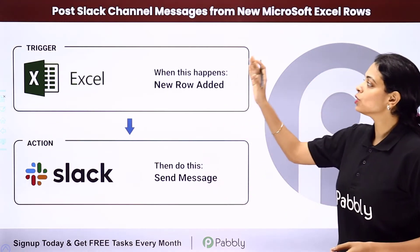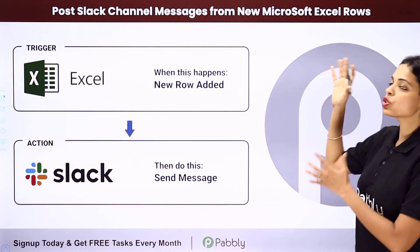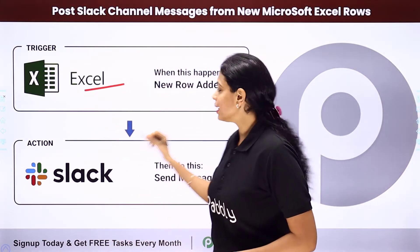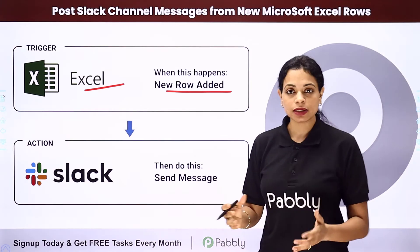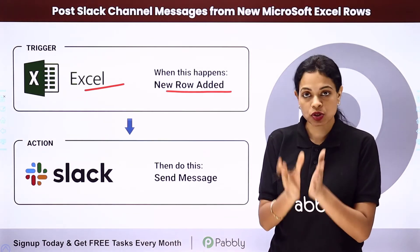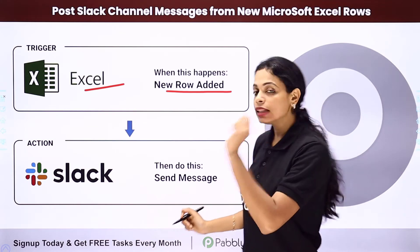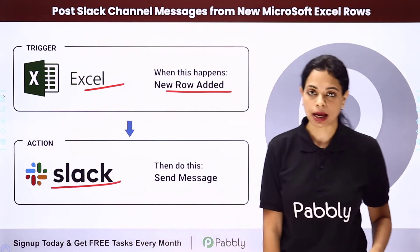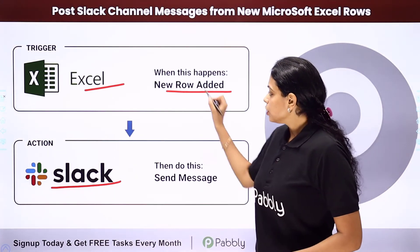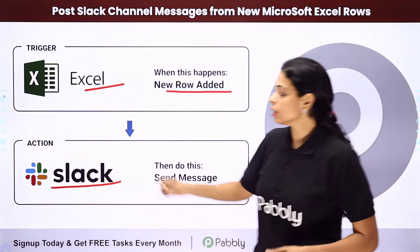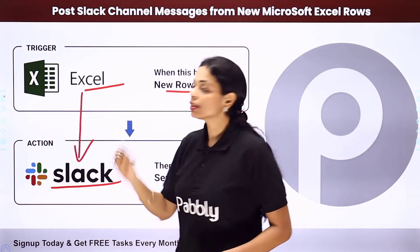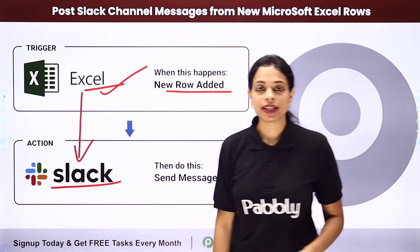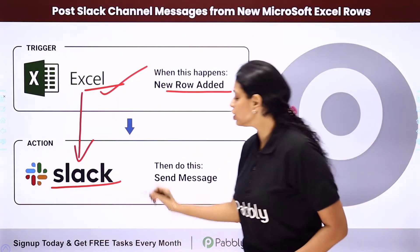In this video, we are going to see how to post Slack channel messages from new Microsoft Excel rows. Let's say you are using Excel as a spreadsheet and you want that every time a new row is added — basically some new information is added to that Microsoft Excel spreadsheet — this information should be shared with your team on Slack, an instant social messaging app. This entire process can be automated by integrating these two applications through Pabbly Connect. Your trigger application would be Microsoft Excel and your action application would be Slack.